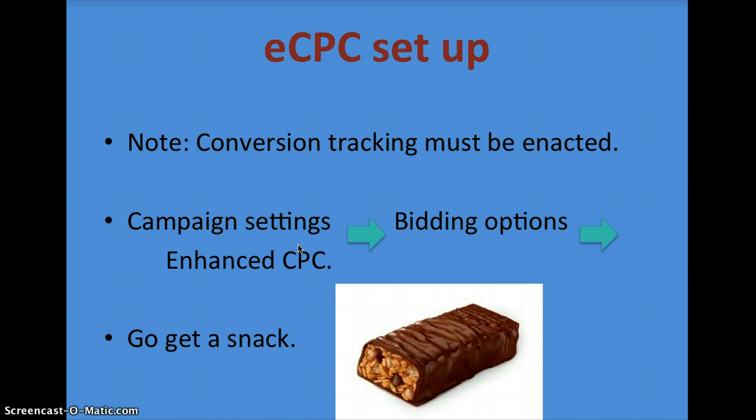For eCPC setup, it's also really easy — you just need to have conversion tracking, go to campaign settings, go to bidding options, click on Enhanced CPC, and then you're done.